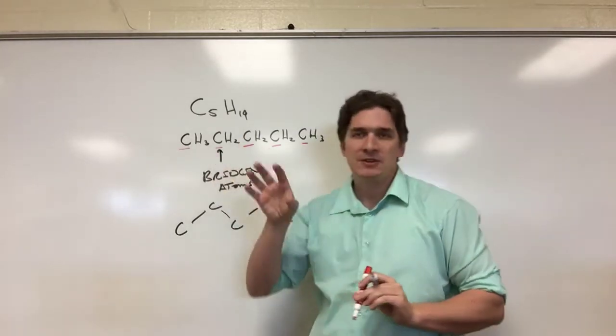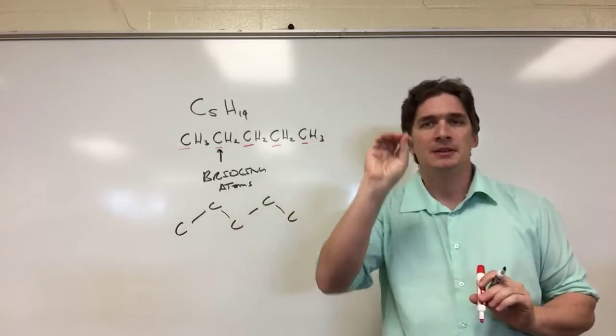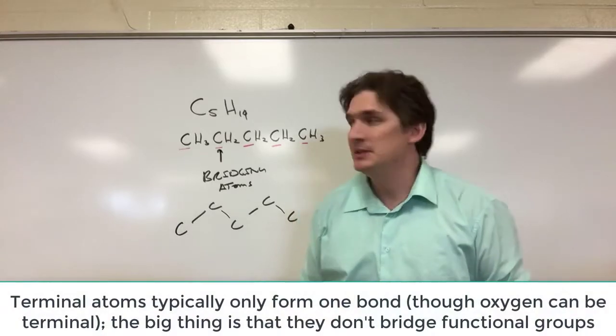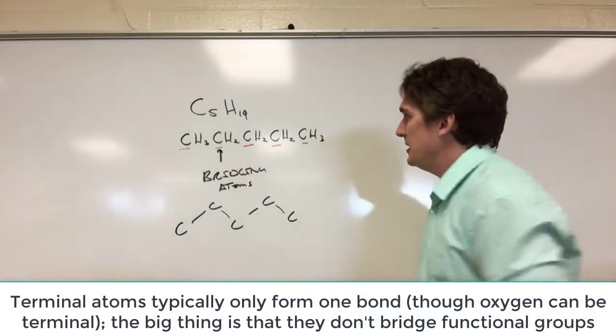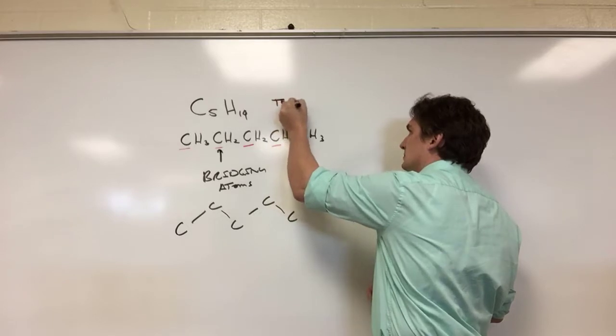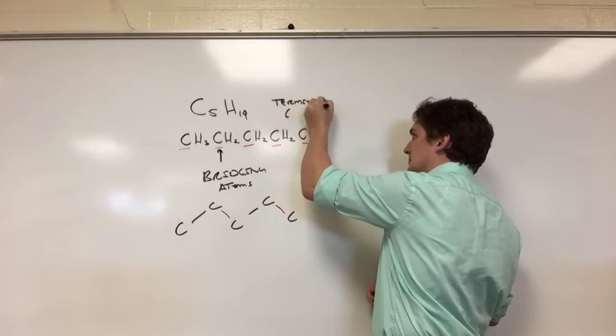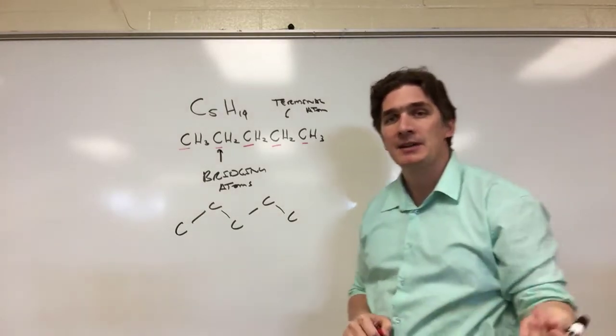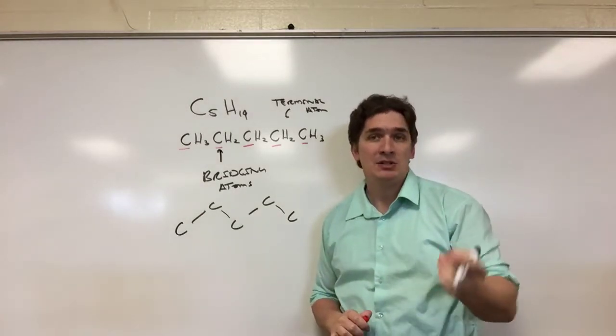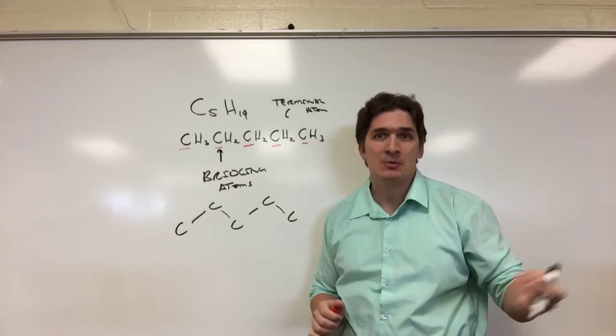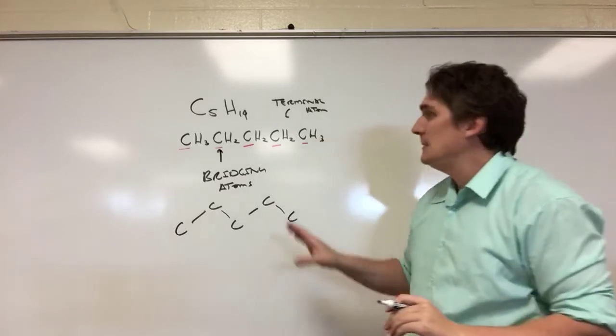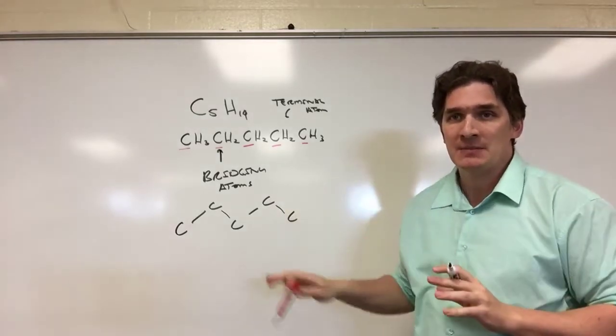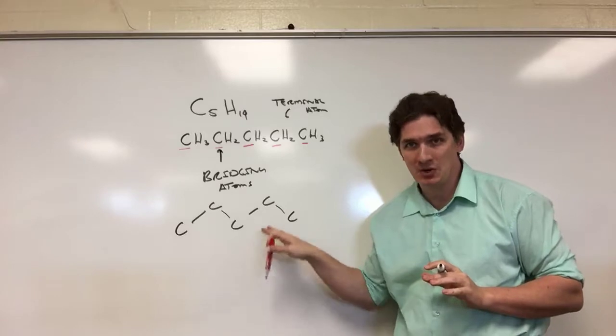Now, typically, a functional group will also have what are called terminal atoms attached to it. These are atoms that don't bridge to another functional group. In this case, hydrogen. So a terminal atom is typically an atom that only forms one bond. In this case, hydrogen and fluorine. Now, oxygen can also be a terminal atom if it's double bound to a carbon. But typically, our terminal atoms are centered around the atoms that make up our bridging atoms, our carbon chain.